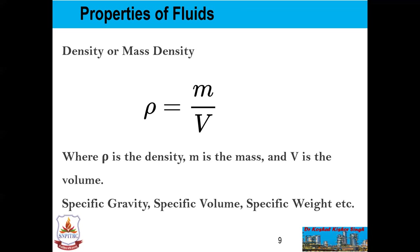The specific volume of a fluid is defined as the volume of a fluid occupied by a unit mass — volume per unit mass of a fluid. Mathematically, specific volume = volume of fluid / mass of fluid = 1/ρ. So specific volume is the reciprocal of mass density. It is expressed in meter cube per kg and is commonly applied to gases.